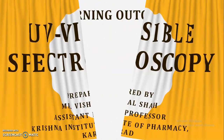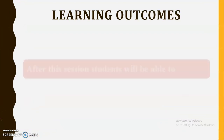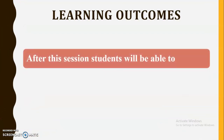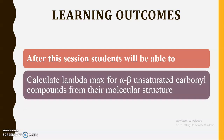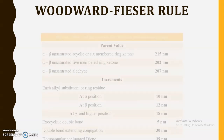So let us begin. First we will discuss what are the learning outcomes of this session. After this session the students will be able to calculate the lambda max for alpha, beta unsaturated carbonyl compounds from their molecular structure. We will discuss the different values, increments, as well as the different auxochromes used in case of alpha, beta unsaturated carbonyl compounds.